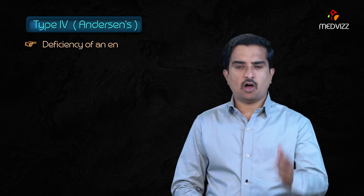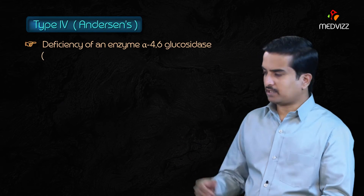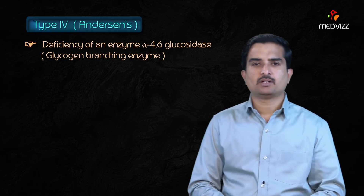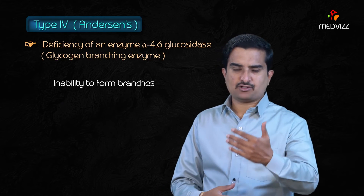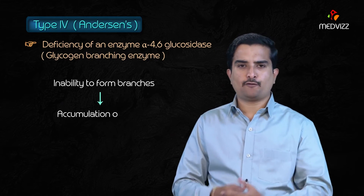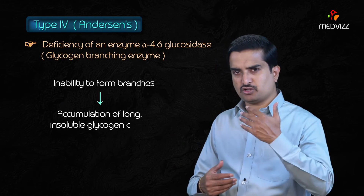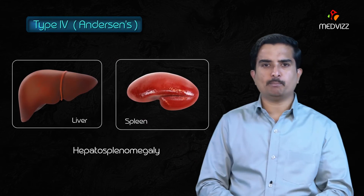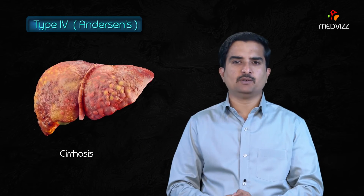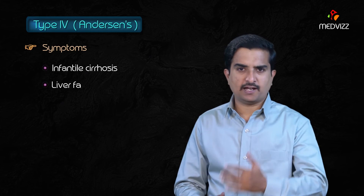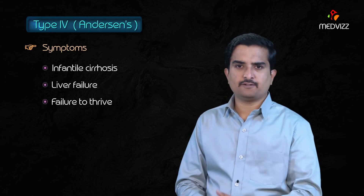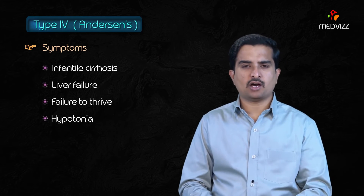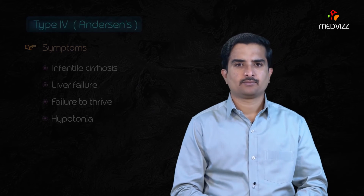Type 4, Anderson's disease, involves a defect in alpha-4,6-glucosidase, the glycogen branching enzyme, causing an inability to form branches. This leads to accumulation of long insoluble glycogen chains, resulting in hepatosplenomegaly, liver cirrhosis, infantile cirrhosis, liver failure, failure to thrive, and hypotonia. These symptoms are usually fatal.